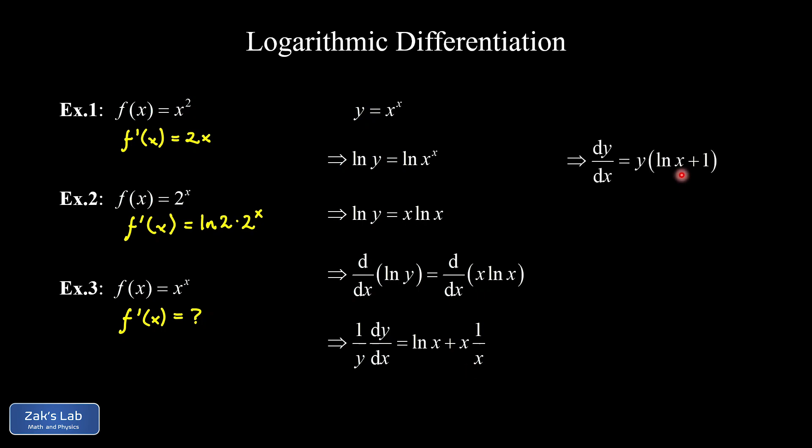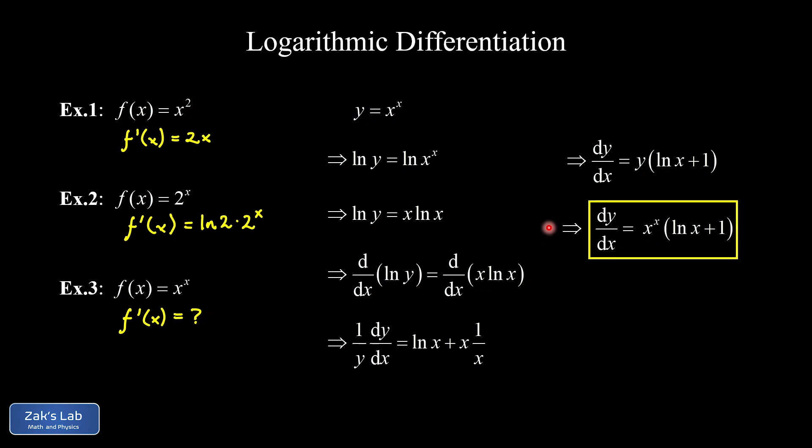The derivative of ln(y) with respect to y is 1/y, and we multiply by dy/dx on the left. On the right, the simplified result is ln(x) + 1. Multiplying both sides by y gives dy/dx = y · (ln(x) + 1). Now we substitute in the definition of y, giving dy/dx = x^x · (ln(x) + 1), written entirely in terms of x. That's the derivative of the function with a variable raised to a variable power.